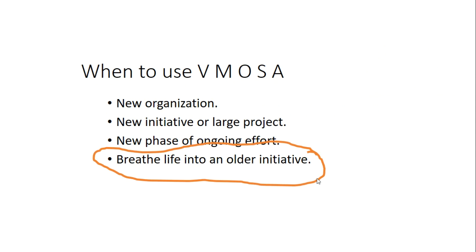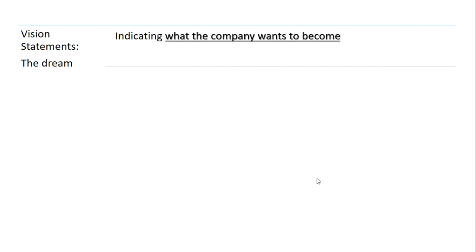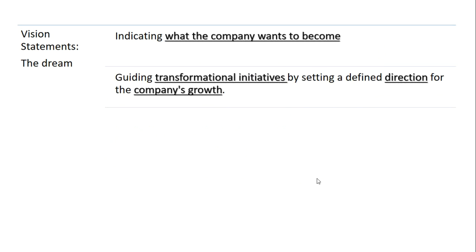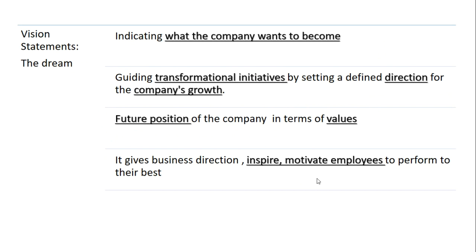A strategic type of approach involves a vision statement — how do you think about what a company is going to do. This covers the transformational initiatives and direction of the company's growth, the future position in terms of values, the direction of the business, the inspiration, and the motivation of the employees to perform their best.